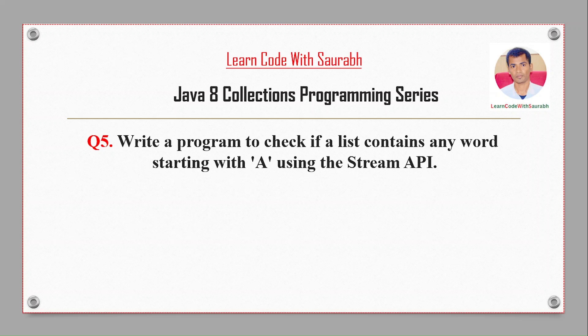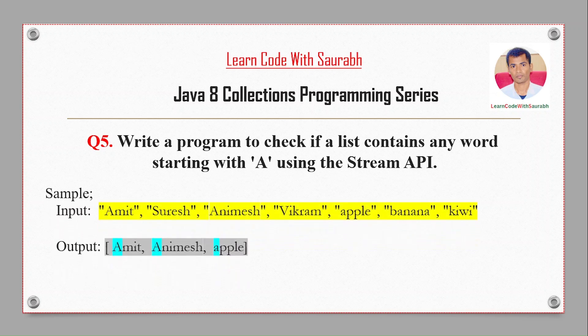Hi friends, welcome to another video. Today I am going to write a program to check if a list contains any word which is starting with 'A'. We will create the program using the Stream API. For example, if we have input like amit, suresh, animes, vikram, apple, banana, kiwi, we have to find which words are starting with 'A' — so amit, animes, and apple. Let's start — I will create a class.